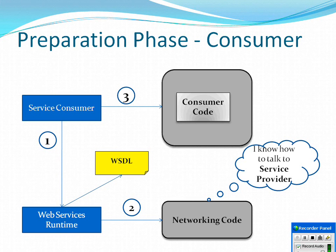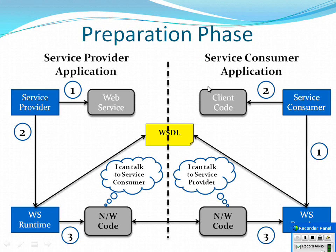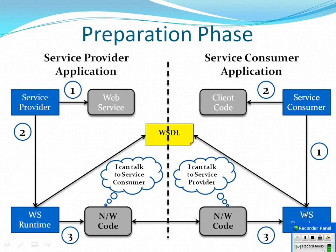The service provider's networking code receives the call and processes the request, executing the real business logic. To summarize the preparation phase: the producer develops the web service, creates the WSDL document, and using the runtime generates the networking code — the skeleton. The consumer, using the web services runtime and the WSDL document, generates the networking code — the stub — and finally writes the client code for invoking the web service.